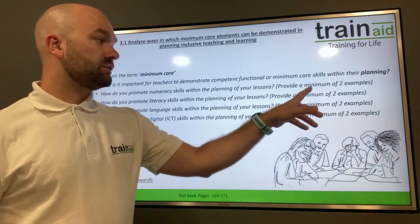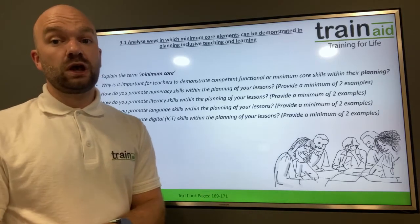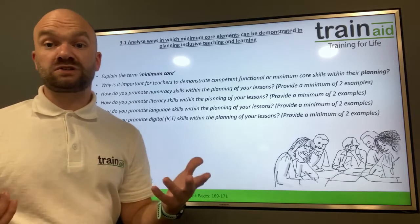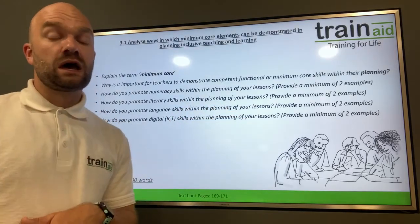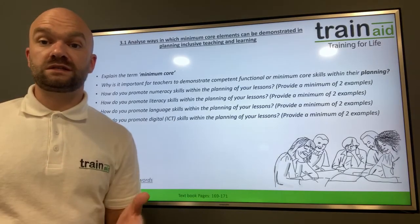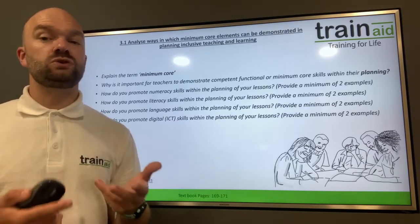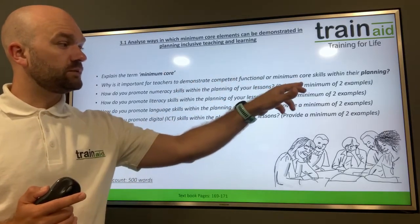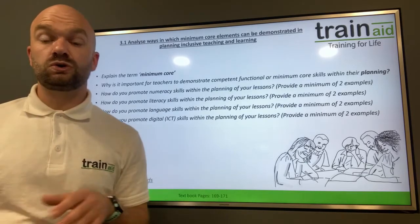In terms of numeracy, for example, you could mention counting the guided learning hours for your course or qualification, or using Excel spreadsheets and graphs to create schemes of work. In terms of literacy, it could be creating a reading list for your learners. For ICT, it could be creating emails to send out resources to learners, or updating Moodle. We're looking for a minimum of two reasons and two examples for each, demonstrating these key skills within your planning.